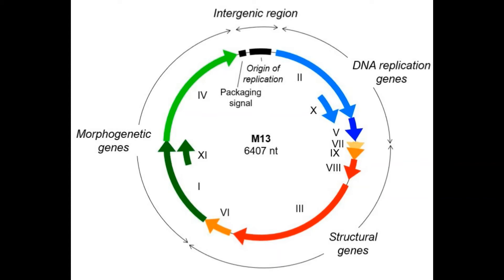Then we have the DNA replicating genes — these are housekeeping genes that must be replicated immediately for the phage to work properly. Next are the structural genes, which determine how the phage structure is composed, and lastly the morphogenetic genes, which decide the order of development inside the phage — essentially covering the order in which coat proteins are assembled.